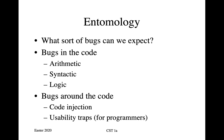We're going to look at a number of different types of bug. Firstly, bugs that have effects on safety, and then towards the end of this lecture, in the next segment, we'll look at bugs that have an effect on security. There are bugs in arithmetic, there are syntactic bugs, and there are logic bugs. And then there are bugs which aren't so much in the code itself as around the code — and I'm going to discuss two: code injection and usability traps.